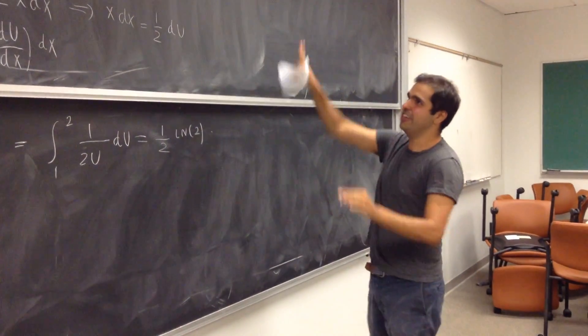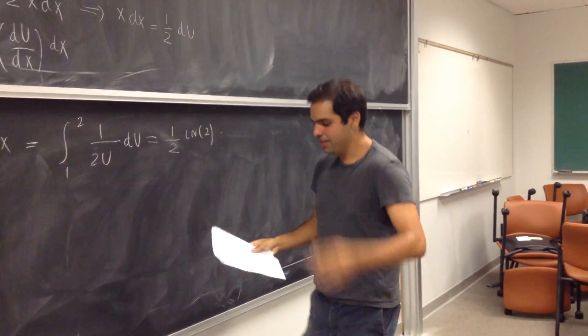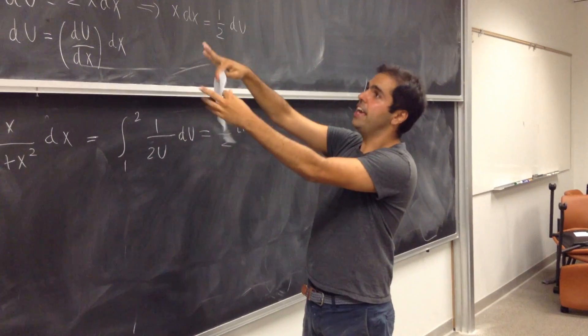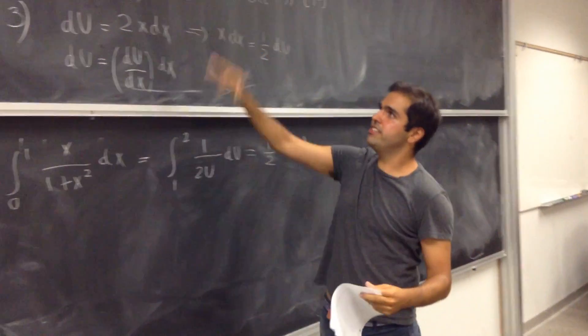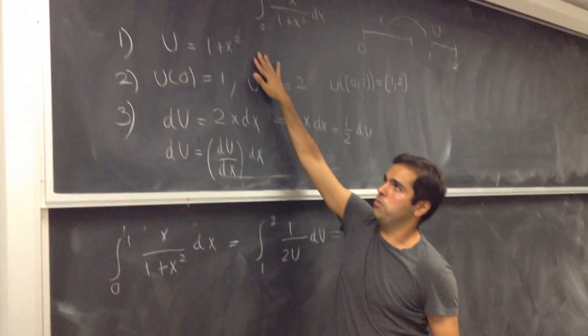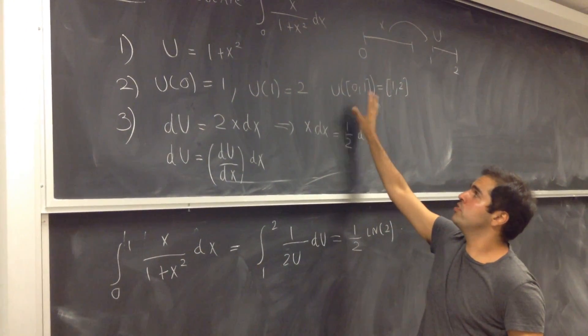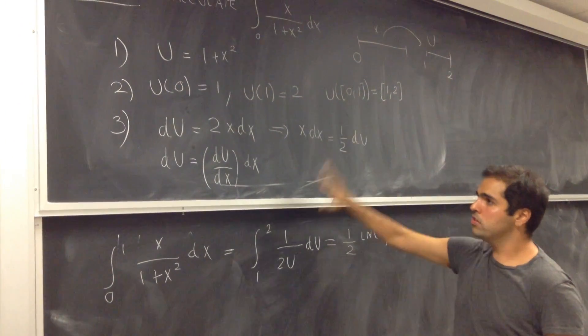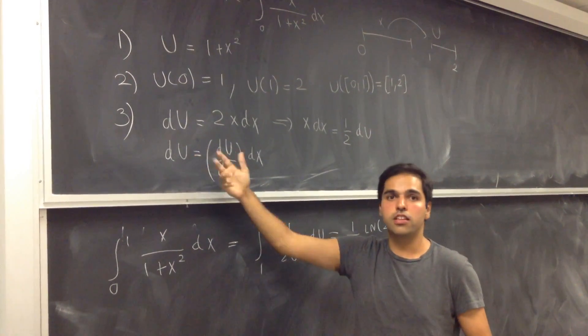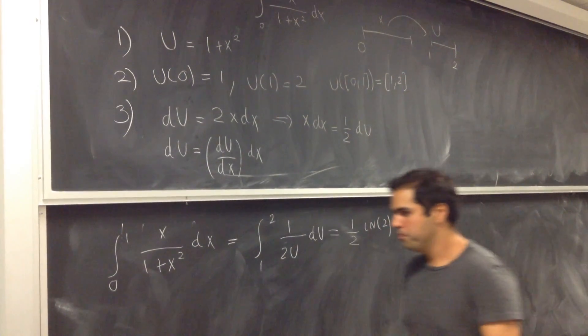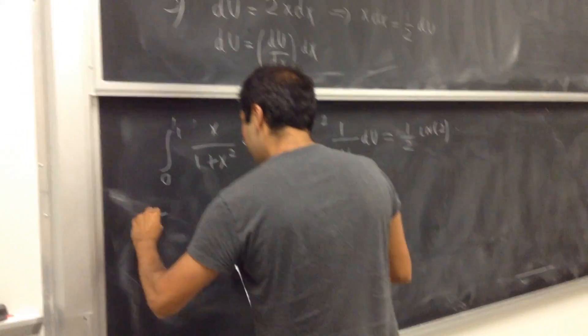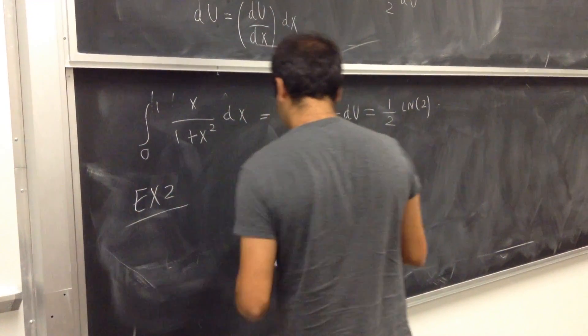This is not why we're here today. We're here for the multivariable example. Okay, so again, I want to reiterate, you have three steps. You define your new variable. You want to figure out what happens to the original domain with those new variables, and you want to figure out what the differentials are, what the du equals to.